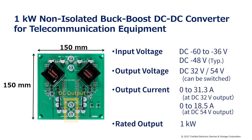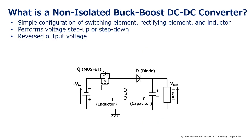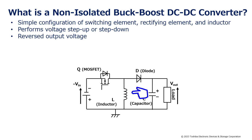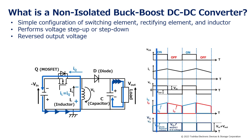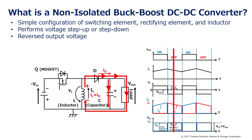The non-isolated buck-boost DC-DC converter is a simple power supply consisting of switching elements such as MOSFETs, rectifying elements such as diodes, and an inductor. This power supply performs voltage step-up or step-down, but the polarity of the output voltage is reversed. In this design, the input voltage is negative and the output voltage is positive. Energy is stored in the inductor while the switching element is on, and this energy is output through the rectifying element while the switching element is off.